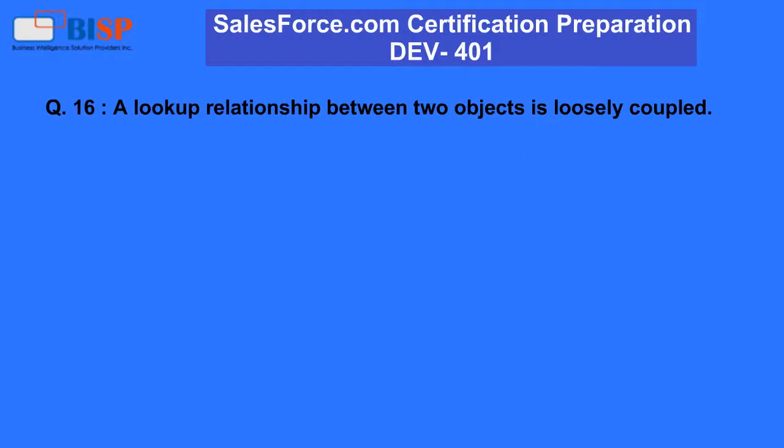Question 16: A lookup relationship between two objects is loosely coupled. A. False. B. True.